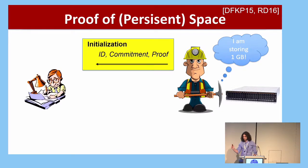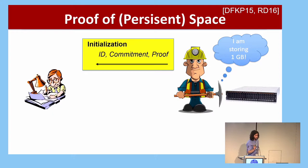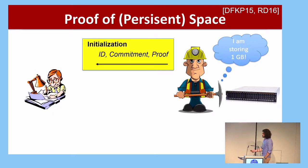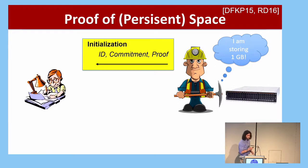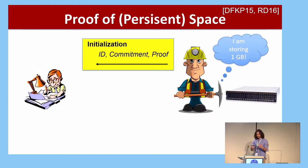In the literature on proof of space, there's a differentiation between two types. The one I just described may only convince the verifier that the prover is using a lot of space to produce the proof, but it may not require persistently using space over time. A proof of persistent space is one where the prover demonstrates that it continuously uses space over time.